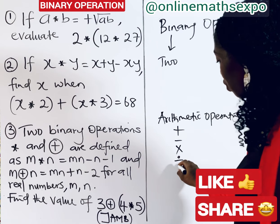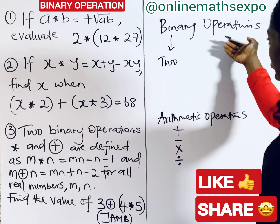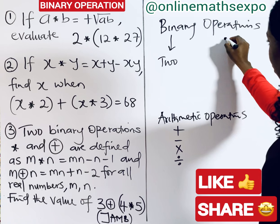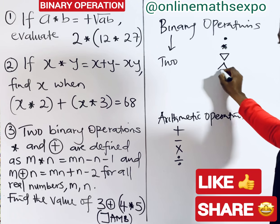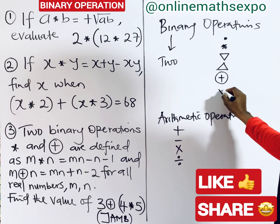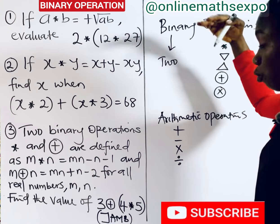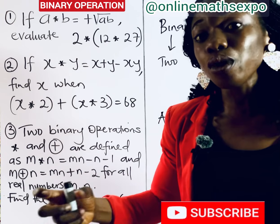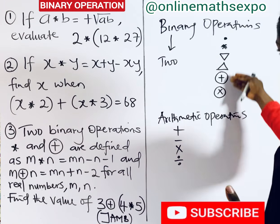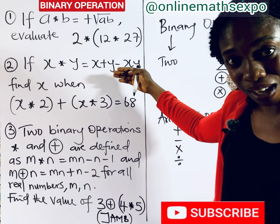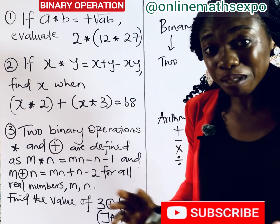The arithmetic operations are: the addition sign, the subtraction sign, the multiplication sign, and the division sign. But when we talk about binary operations, we use operations like a dot, an asterisk, and various other symbols. These are the operations we make use of in binary operation. Binary operation simply means applying this operation on two non-empty sets.